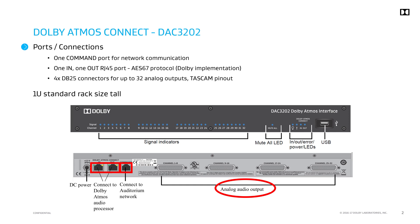There is one Ethernet command port for network communication. Also included are two RJ45 ports for Dolby Atmos Connect — one port for in and one port for out. Up to 32 analog outputs are available via four DB25 connectors which have a Tascam pinout.